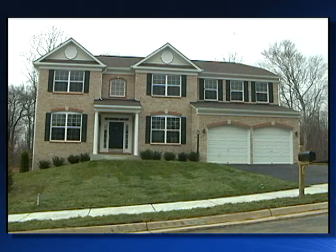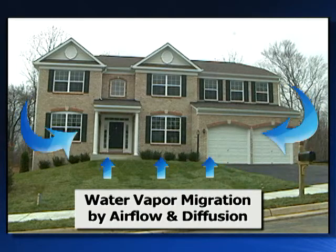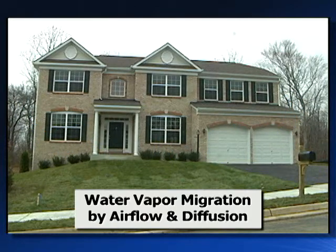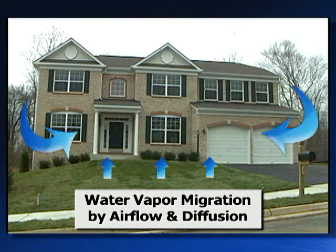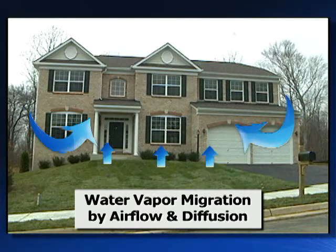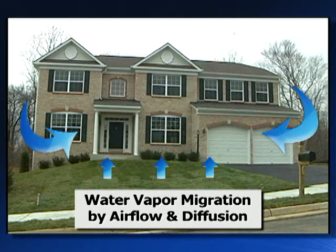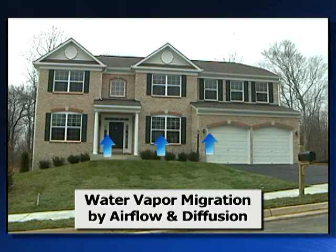The building enclosure is designed to manage water vapor flow by considering the assembly of the structure, the materials used, and the climate. Generally, water vapor flow through the building enclosure can occur by air flow, since water vapor is transported by air, or by diffusion. The rate of vapor transported by air flow depends on the air pressure difference between indoors and outdoors, the air tightness of the enclosure, and the water vapor content of air. The rate of diffusion depends on indoor and outdoor relative humidity and temperature and the permeability of the building materials.